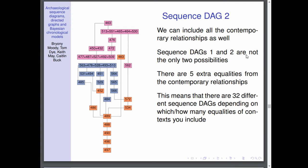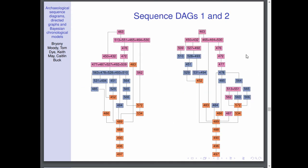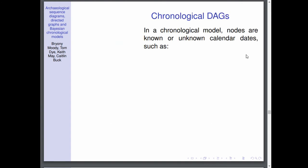That would be quite tedious to present them all to you. So don't worry, we're just going to proceed with the two we've looked at, which are this one on the left which is using all of the contemporary and once whole relationships, that's sequence DAG 2, and then sequence DAG 1 just includes the once whole relationships.